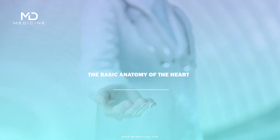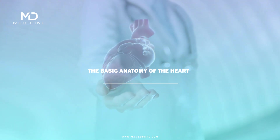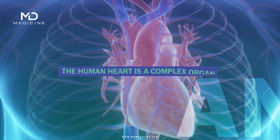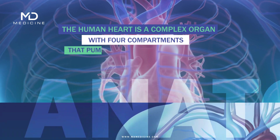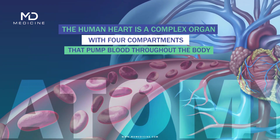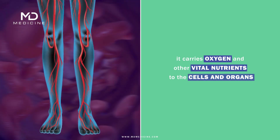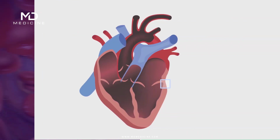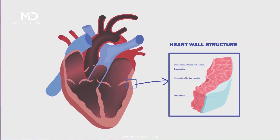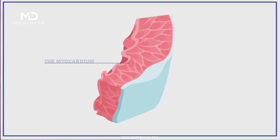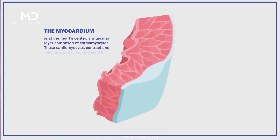The basic anatomy of the heart: the human heart is a complex organ with four compartments that pump blood throughout the body. It carries oxygen and other vital nutrients to the cells and organs. The myocardium is at the heart's center, a muscular layer composed of cardiomyocytes. These cardiomyocytes contract and relax to pump blood and send it through the body.